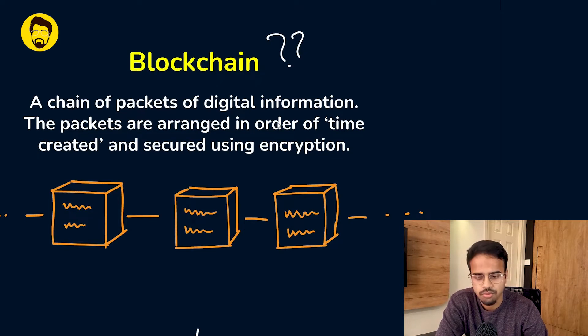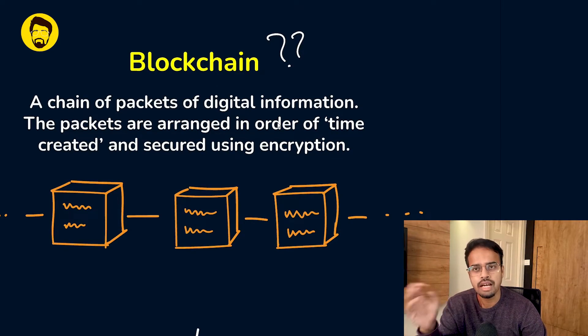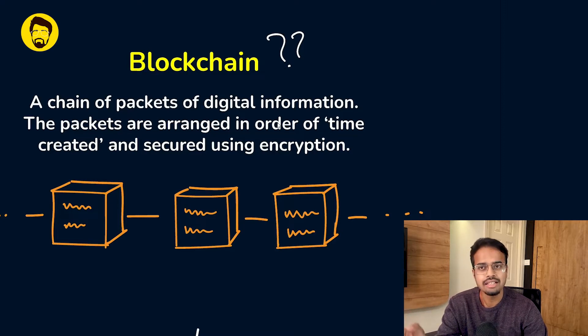A blockchain is a chain of packets of digital information. The packets are arranged in order of time they have been created and secured using cryptography. The entire chain is managed in a decentralized manner. When I say blockchain, the most critical part is the consensus mechanism.